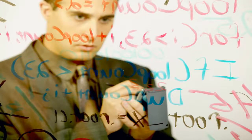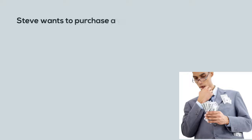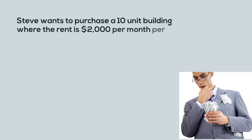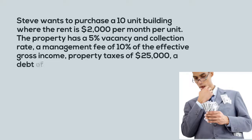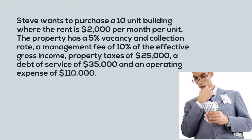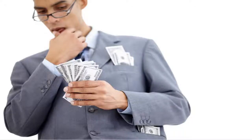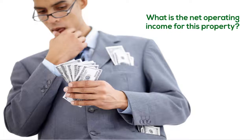Now let's try solving a problem. Steve wants to purchase a 10-unit building where the rent is $2,000 per month per unit. The property has a 5% vacancy and collection rate, a management fee of 10% of the effective gross income, property taxes of $25,000, a debt service of $35,000, and operating expenses of $110,000. What is the net operating income for this property?